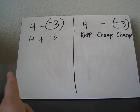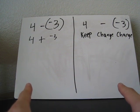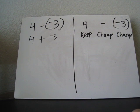So on the right, we have the keep change change, but on the left, we have the add the opposite method.